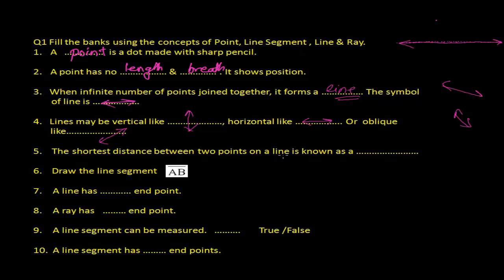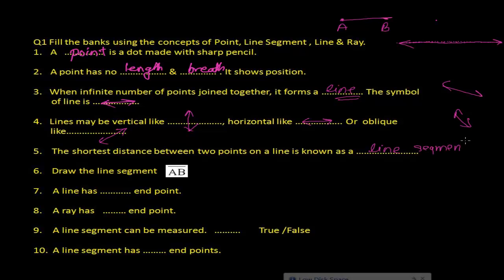The shortest distance between two points on a line is known as a line segment. So the shortest distance between point A and point B is the line segment AB.